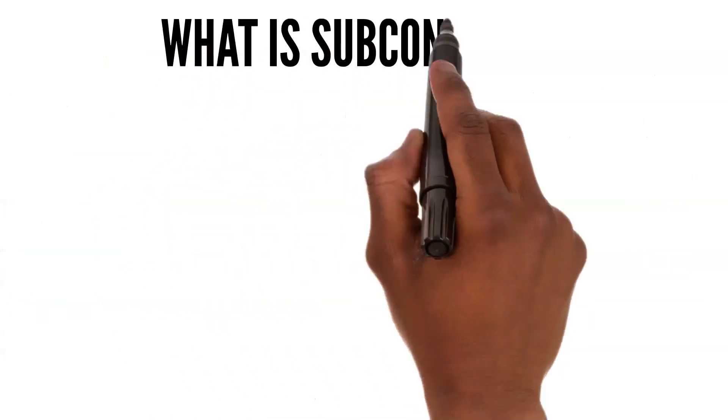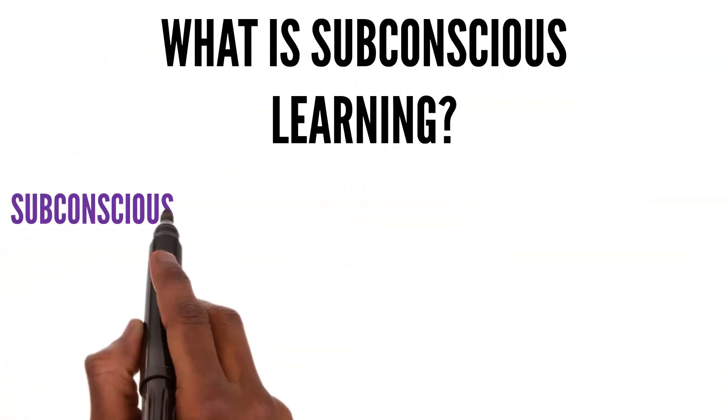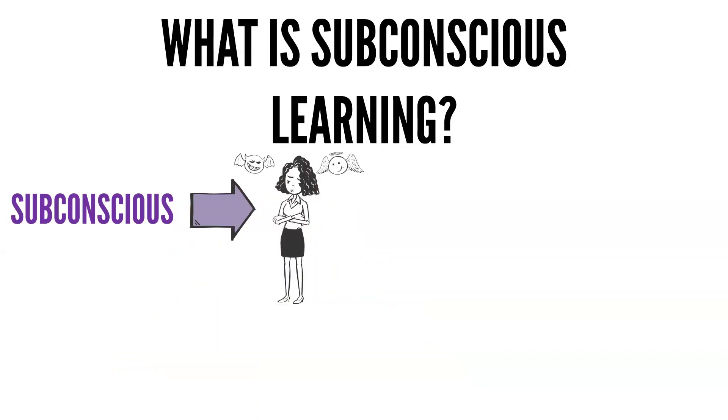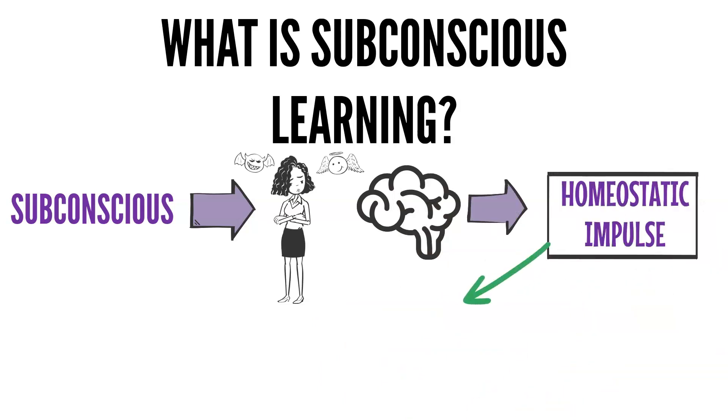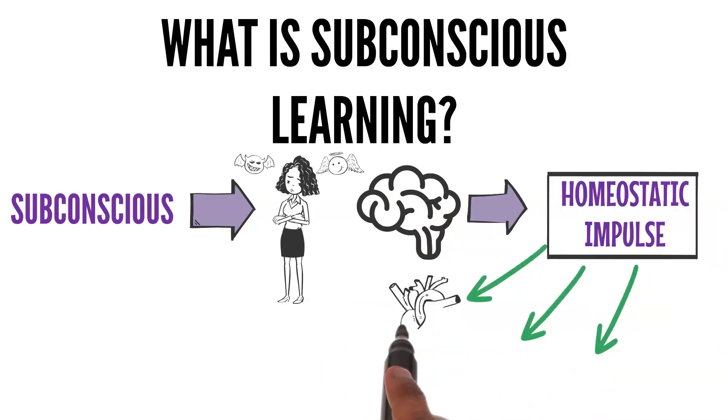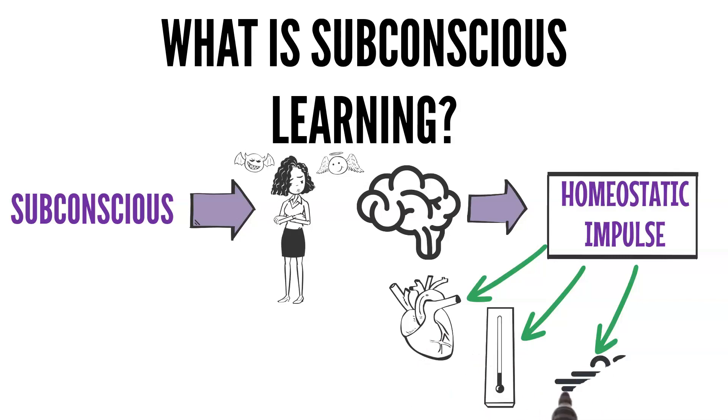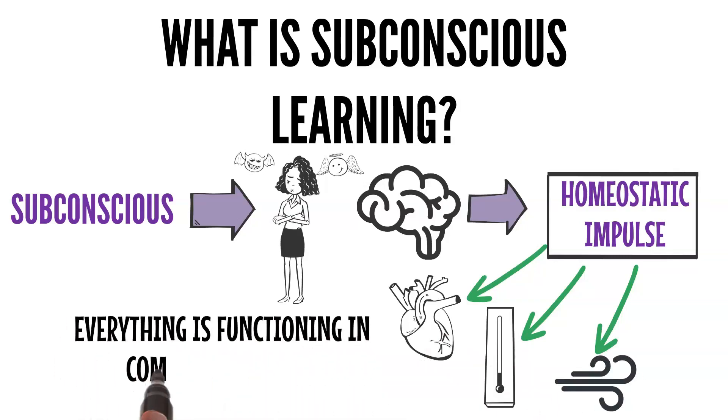What is subconscious learning? Your subconscious often influences conscious decisions without you even realizing it. Your subconscious mind has a homeostatic impulse which controls bodily functions like heartbeat, body temperature, and breathing. This impulse ensures that everything is functioning in complete harmony.